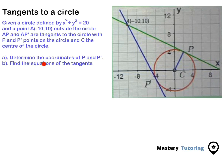Part A says: determine the coordinates of P and P'. Here is the diagram we're given, and everything is drawn to scale. We're looking for the coordinates of point P. We can easily read it from the diagram — from here to there it's about 2 units, and then going straight up to point P it's about 4 units. So P is (2, 4).